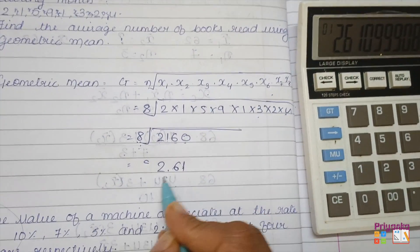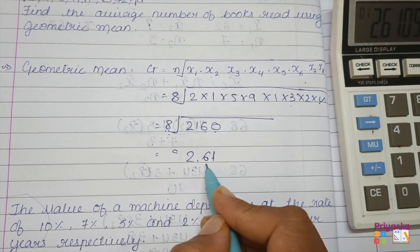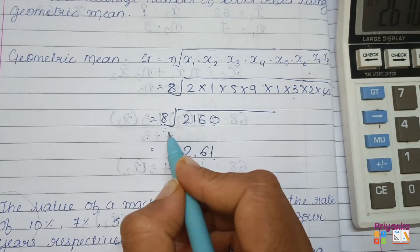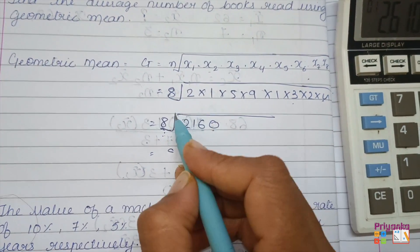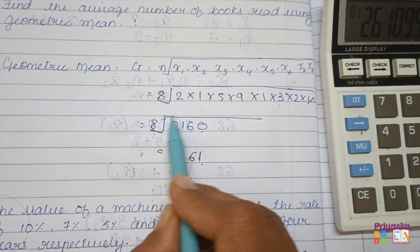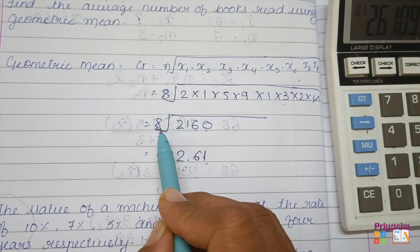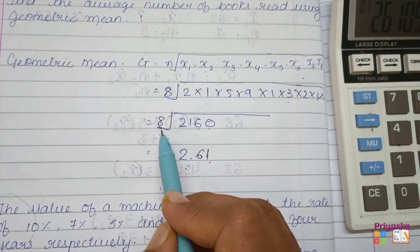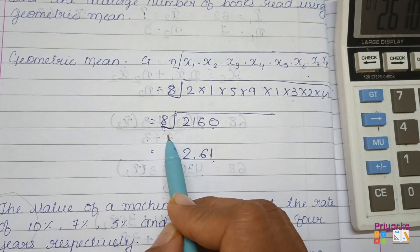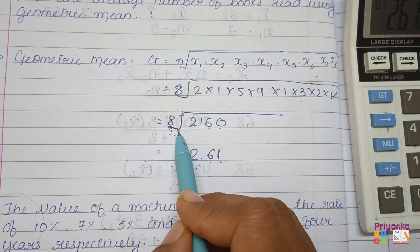The third number is 0, so no need to increase any digit over here. So the answer will be 2.61. Now here I will explain about this n when it is given in the geometric mean to find the root on this number.